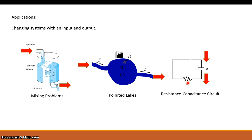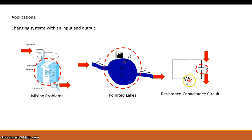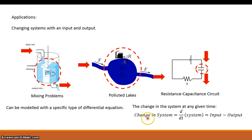In each of these cases you've got some sort of input and output in the system. Keep in mind that important phrase: changing system, or changing rate of the system — and to be more mathematical, changing with respect to time. So now you can see there's a differential involved, and verbally there is a differential equation. These systems can all be modeled with a first-order linear differential equation. You can think of it as: the change in the system at any given time — d/dt of the system — is equal to the input minus the output. That is what a first-order linear differential equation looks like stated verbally.